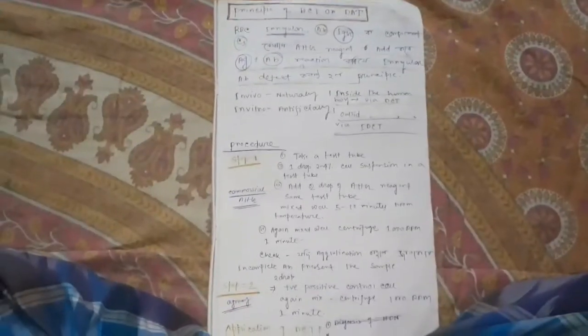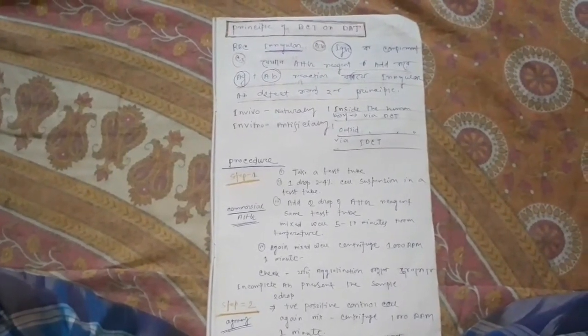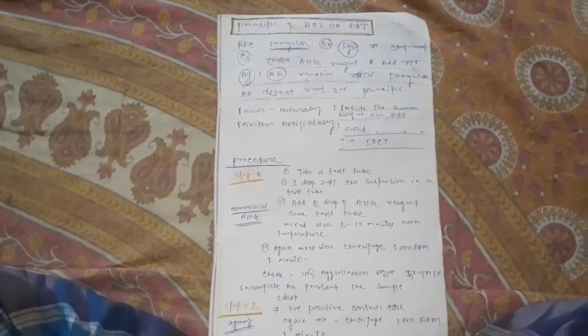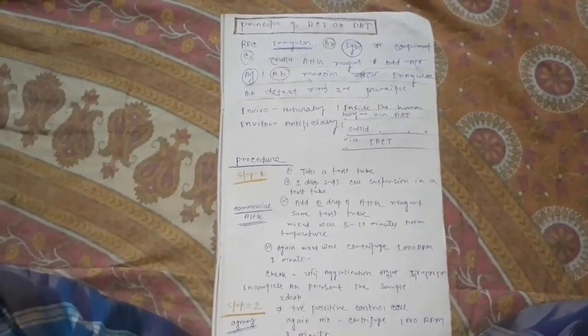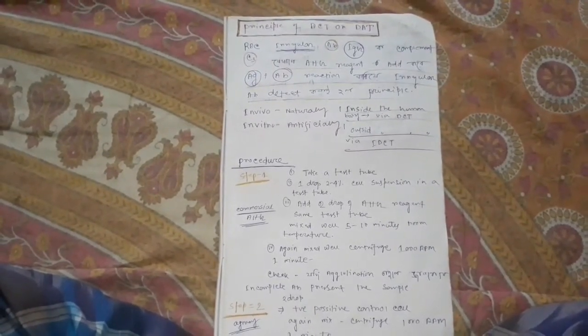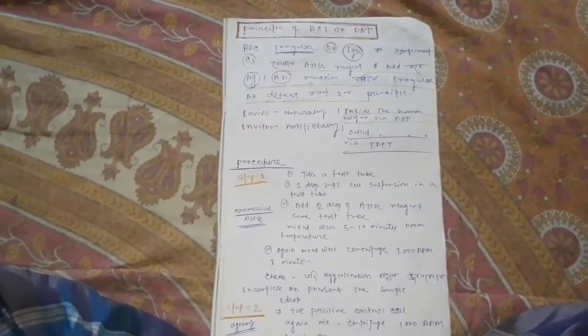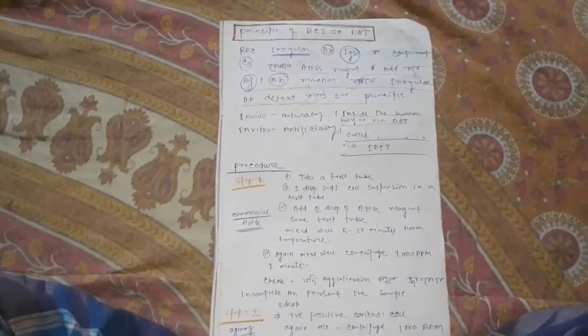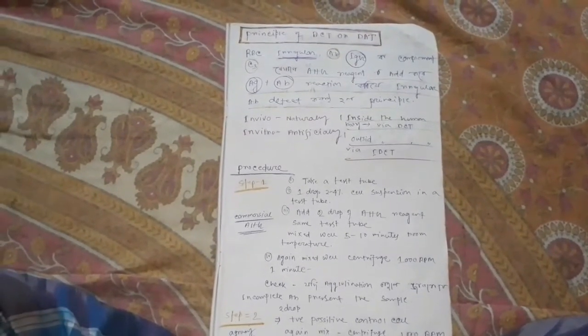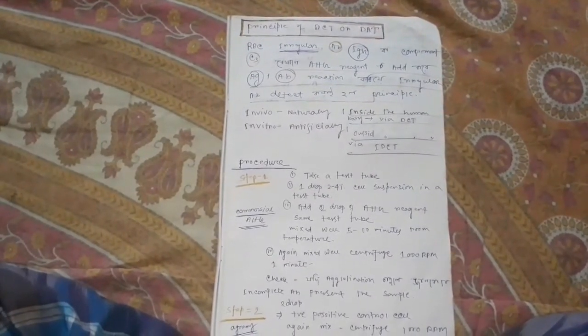Next, the principle of DCT or DAT, Direct Coombs Test or Direct Agglutination Test. This is an RBC-bound antibody. When the complement system is present on the RBC, when C3 is present.